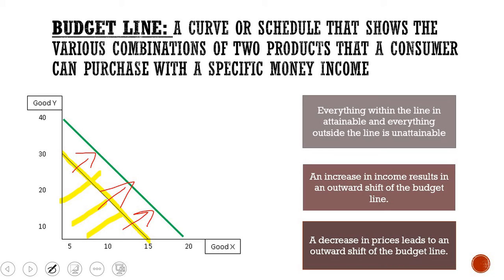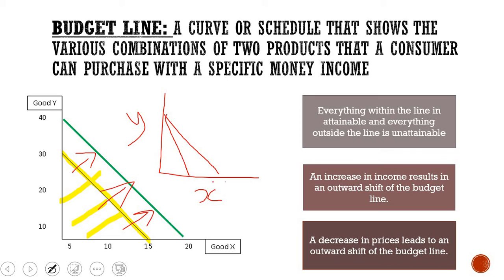If we look at another budget line — with good X on one axis and good Y on the other — and there is only a change in the price of good X, this means we can purchase less of good X. So our budget line will shift downward, showing a decrease in the quantity of good X we are able to purchase with our money income.